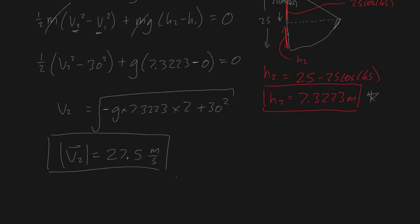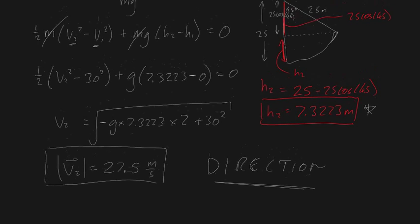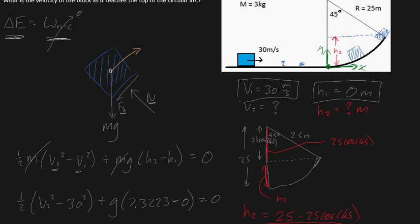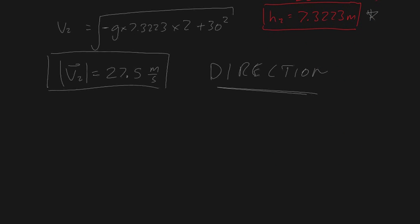Put your hands up if you think this is the end of our question. You're wrong because we've been asked to calculate the velocity of our second point, meaning we have to add direction. Remember, velocity is a magnitude and a direction. Fortunately, we know the block is traveling parallel to our path, in this direction here.